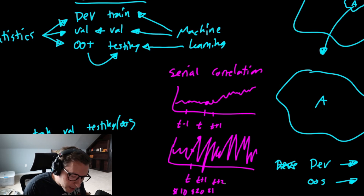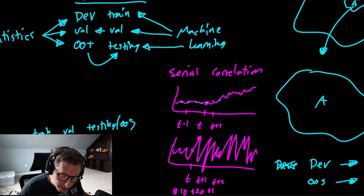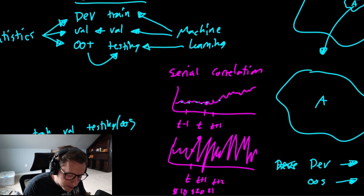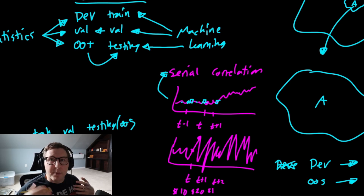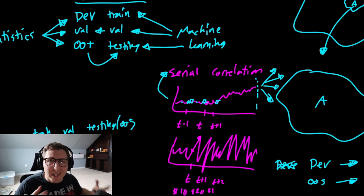If you split your data and randomly sample points across all time, your 70% development population will have every time period in it. When you go to use it in practice, it won't be useful because you'll overfit. You kind of know the other points around any given point because of serial correlation. You're cheating — you already know what the value is going to be just by looking around it. So out-of-sample random splitting is not valid in finance. If you randomly sample, you'll get very overfit models that blow up in practice.